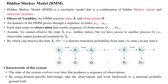Welcome to the hidden Markov model session. The hidden Markov model is a stochastic model that is a combination of hidden Markov chains and its observed variables. The hidden Markov model is always a combination of the set of states S, which are all hidden, and the set of observations, which are all produced by these hidden states.